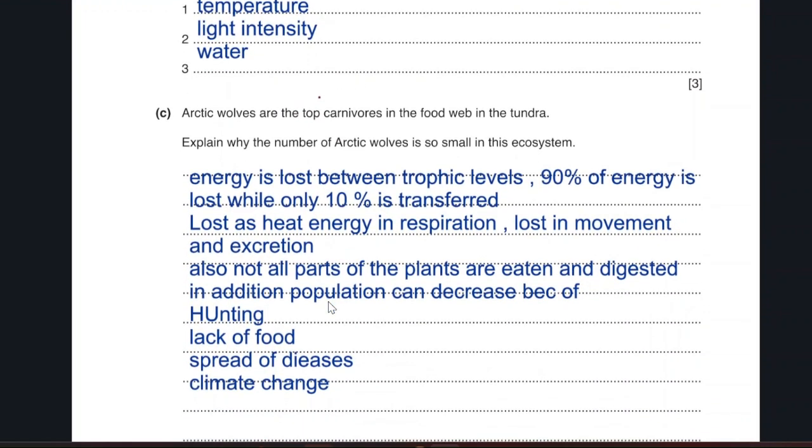90% is lost while 10% is transferred. It is lost as heat, energy, and respiration, movement, excretion. Also, not all parts of the plants are eaten and digested. In addition, to get the six marks out, population decrease because of hunting, lack of food, spread of diseases, climate change.